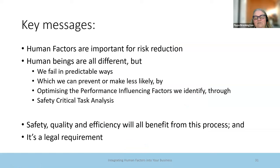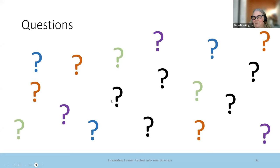Okay, so key messages. Human factors are important for risk reduction. Human beings, we're all different, but we fail in predictable ways. We can prevent those, we can make them less likely by optimizing performance influencing factors in line with relevant good practice. And safety critical task analysis is the core way we do that. It all comes back to risk assessment, and that is the way to go and do a proper assessment. Safety, quality and efficiency will all benefit from that, and it's a legal requirement. So that's the end of that. And it's over to questions. So it wasn't too bad. I only went six minutes over. Sorry, Nigel.